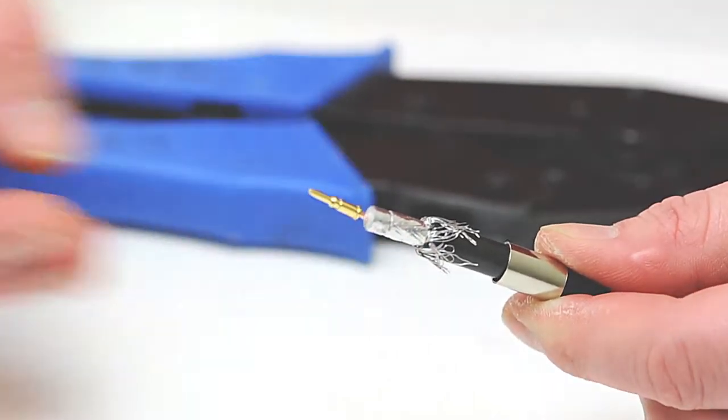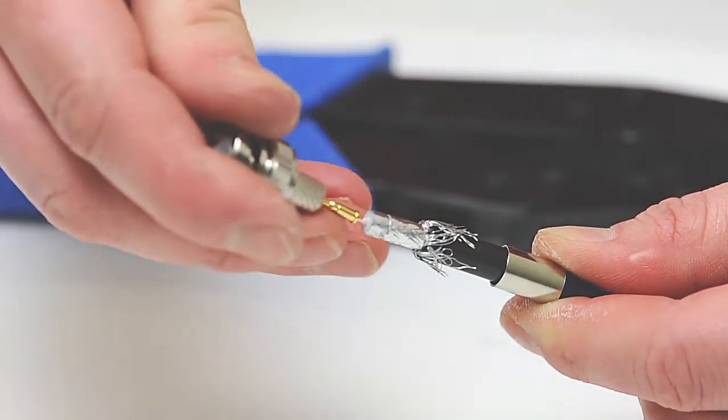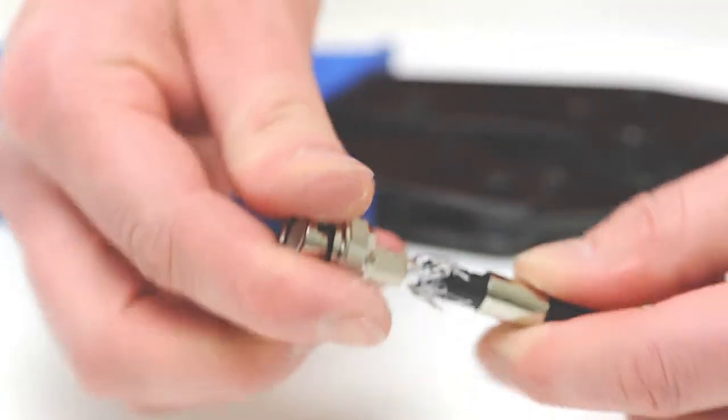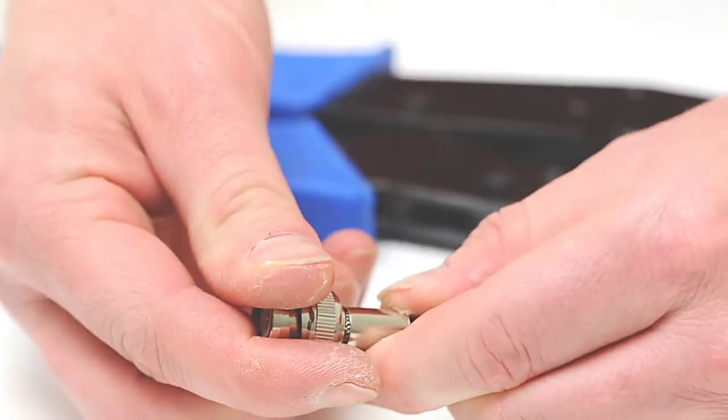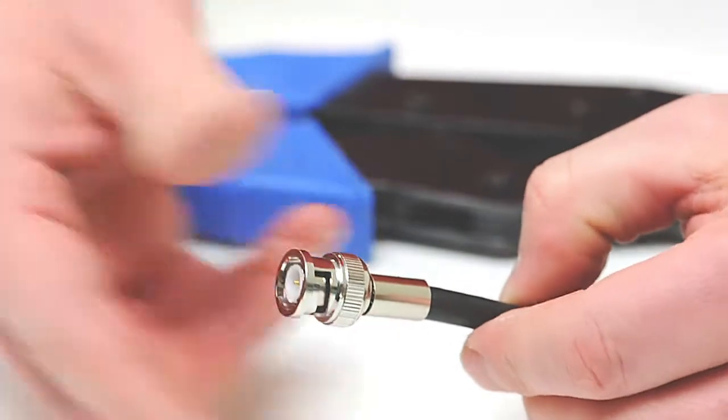Next, take the BNC housing and slide it all the way onto the cable. Slide the ferrule back over the jacket making sure it holds the braid onto the connector.